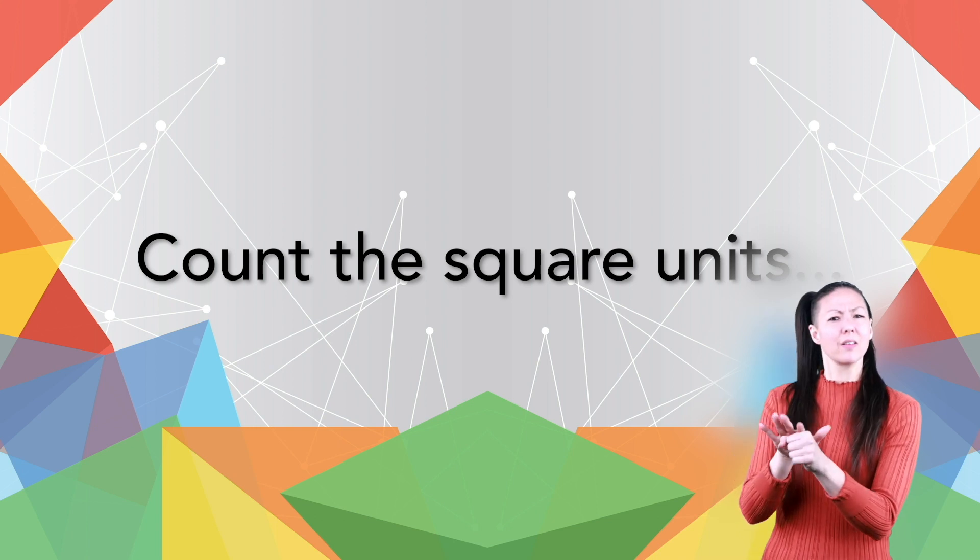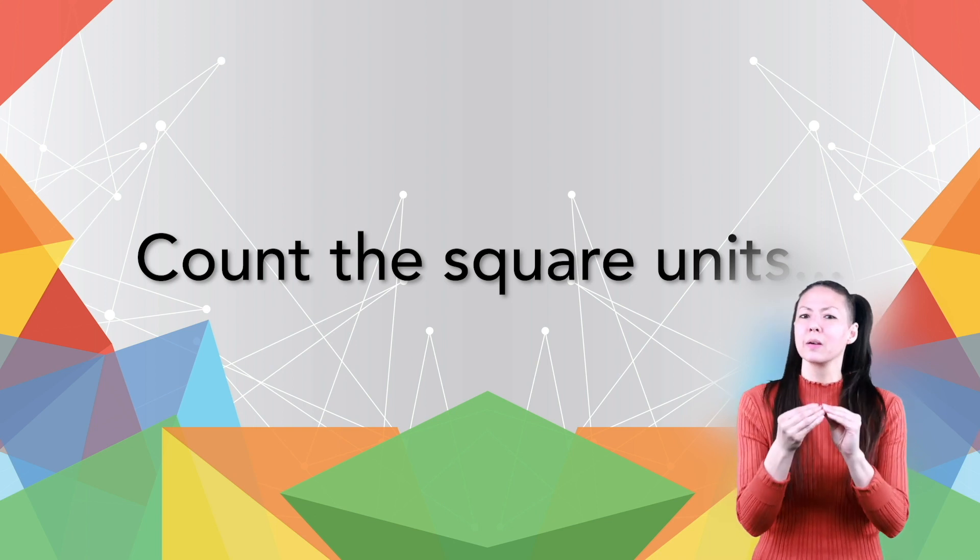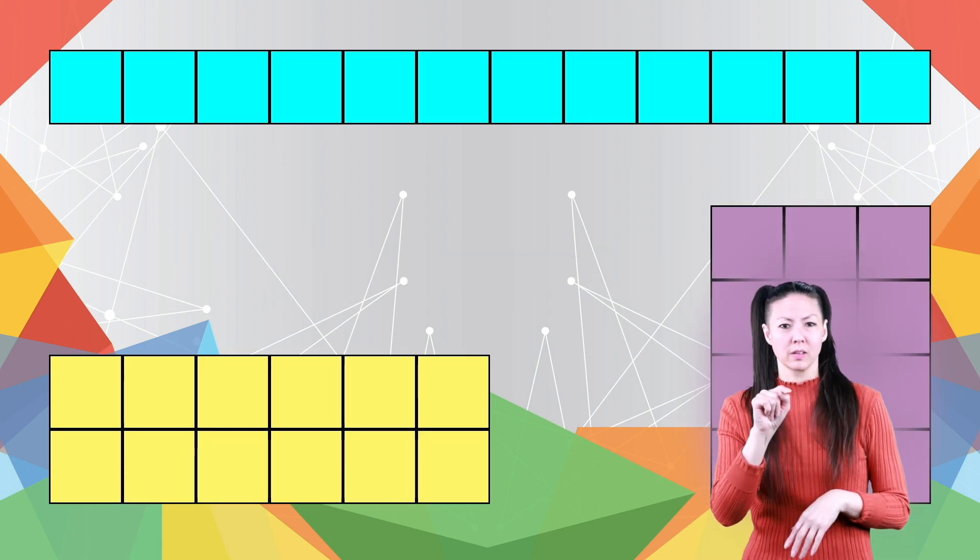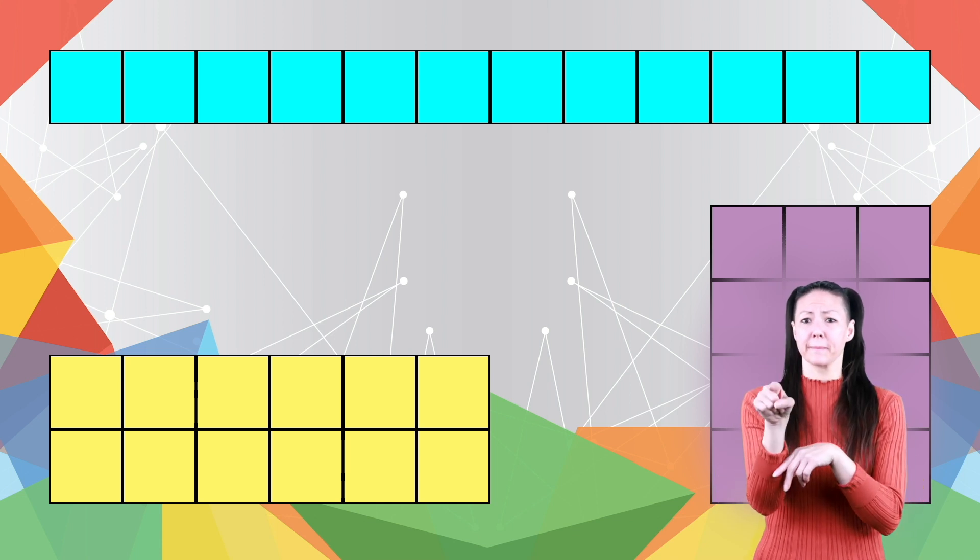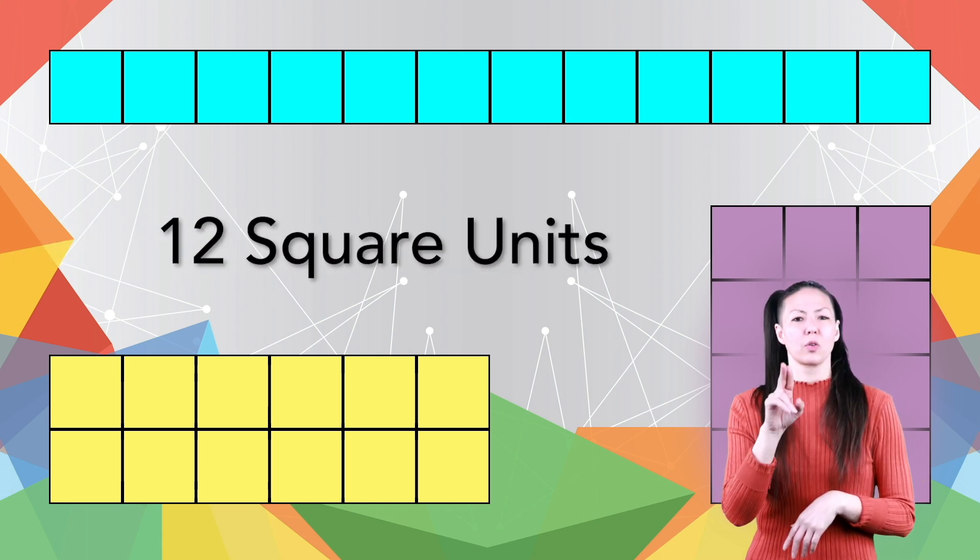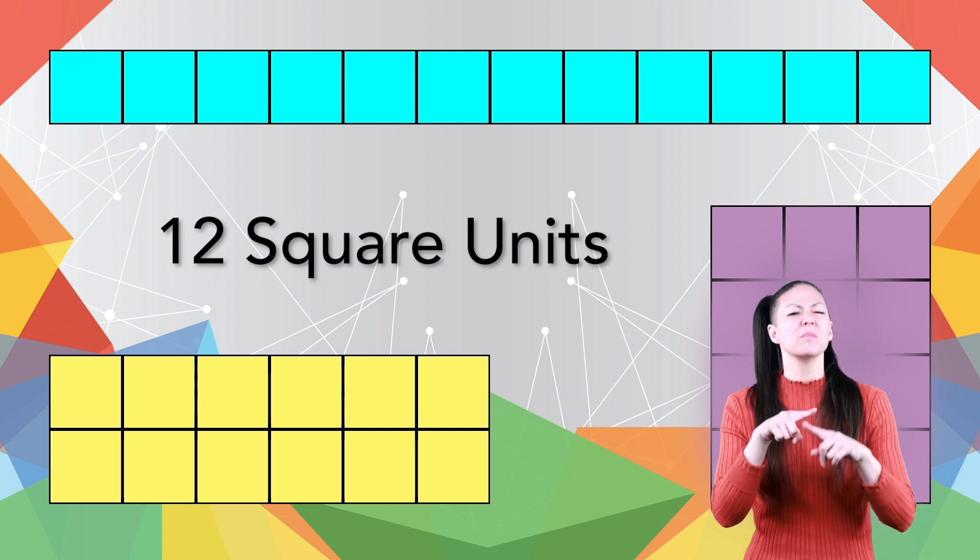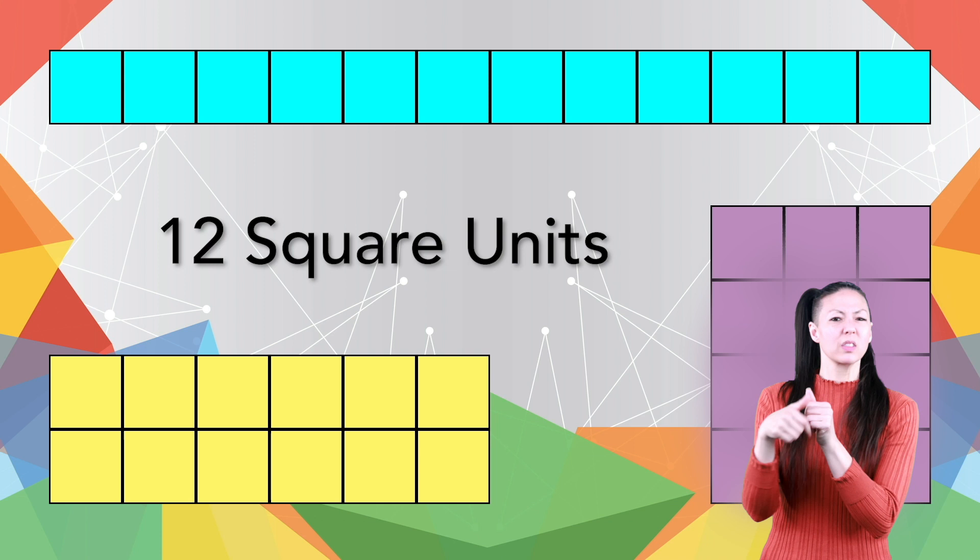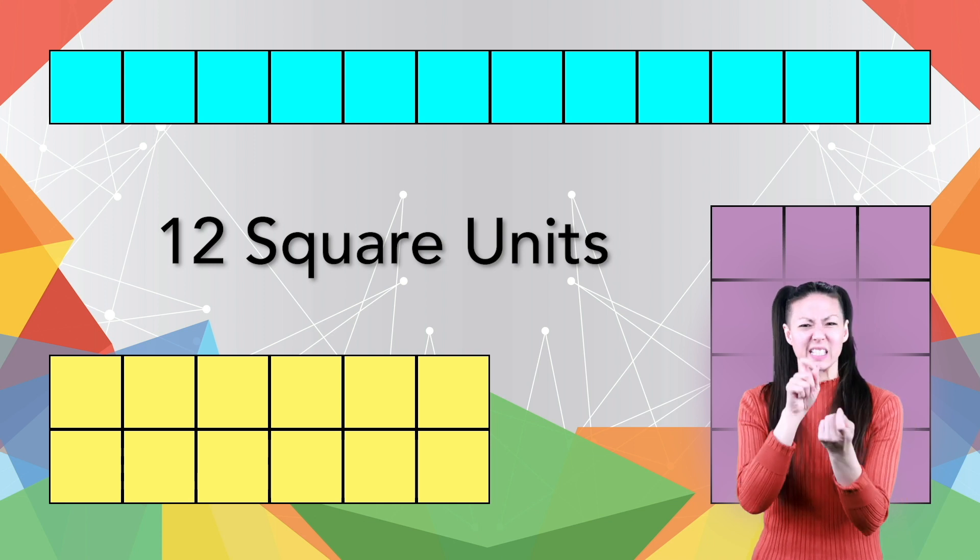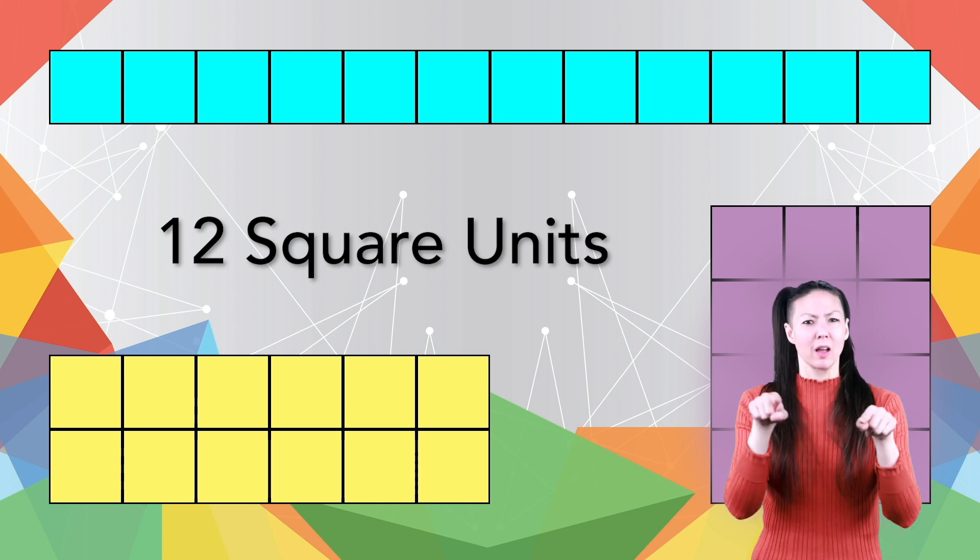To find the area, you simply count the number of square units of a figure. See these three shapes? They all have the same area, 12 square units. It could be square inches, square feet, or square miles, depending on the units you're working with. Notice how all those shapes have an exact number of squares in them, so it's pretty easy to figure out their areas.